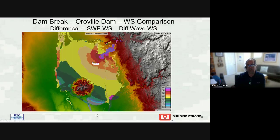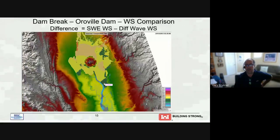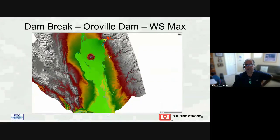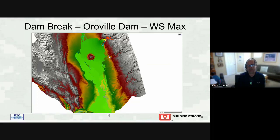Progressing further in time, the same trend holds: shallow water is higher near the dam, about the same in the middle, and diffusion wave is higher on the leading edge because it reaches overbank areas sooner. At the final maximum extent, comparing diffusion wave (green/red) to shallow water (blue), there's not much difference in extent. But what actually happened was very different in terms of travel time and water surface elevations throughout the event. You can't only look at extent — you must compare water surfaces, timing, and velocities.